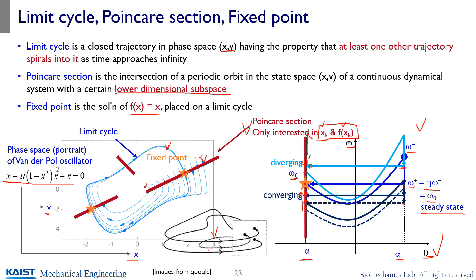When you look at Google Images for limit cycle, there are often 3D trajectory examples. The Poincare section there is a two-dimensional, one-dimensional-lower subspace. So instead of examining all trajectories, you can just examine the initial point and what happens at the next intersection point. If these match — that's the fixed point — you can find the periodic cycle. The limit cycle is the repeated steady-state cycle with at least one other trajectory spiraling into it. The Poincare section is the lower-dimensional subspace focusing on start and next-step points. The fixed point is where f(x) = x.